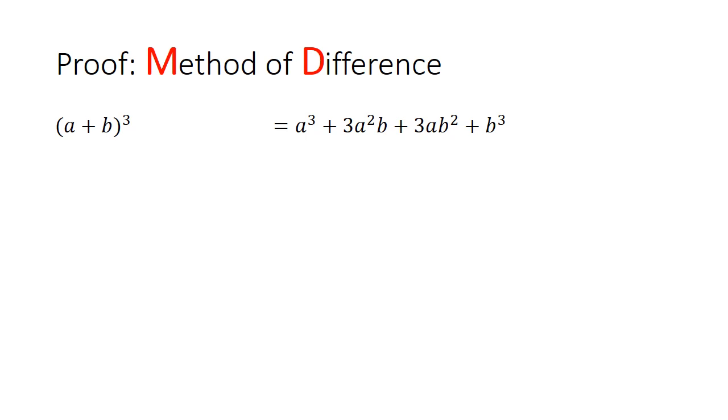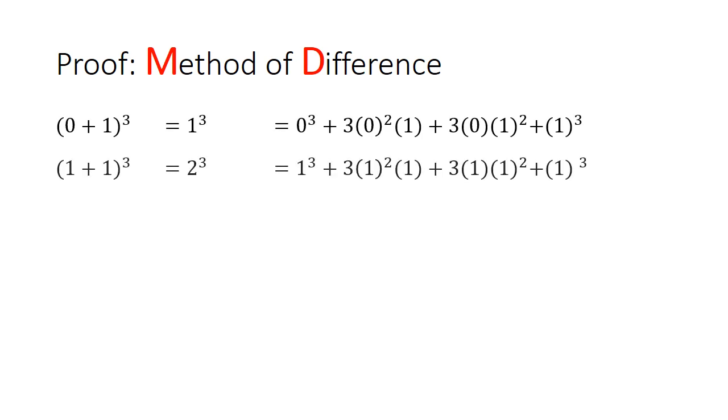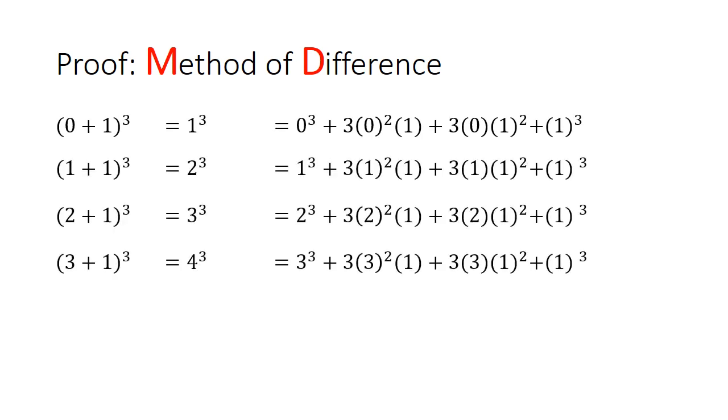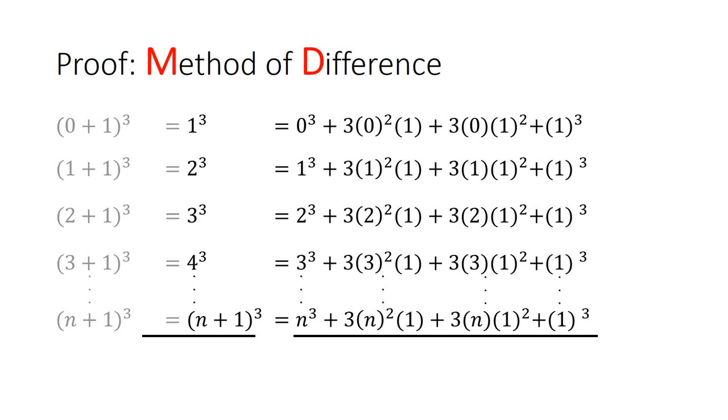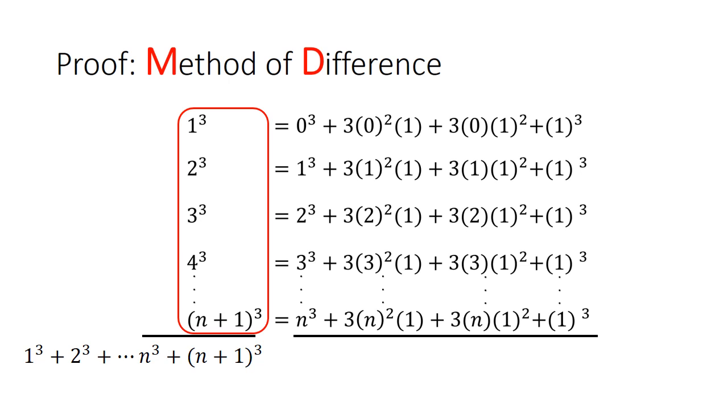I'm going to apply this cubic expansion for (0+1)³. And I'm going to keep expanding (1+1)³, (2+1)³, all the way to (n+1)³. Now I'm going to remove the first column and tally up the sum of cubes circled in red on the left, as well as tally up the sum of cubes circled in blue on the right. We can remove the common terms on both sides, and that just leaves us (n+1)³ on the left hand side.